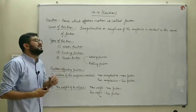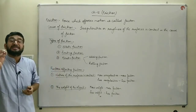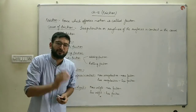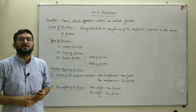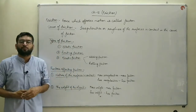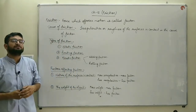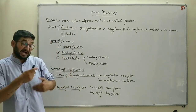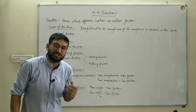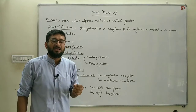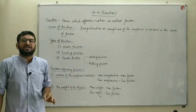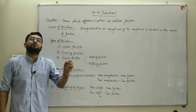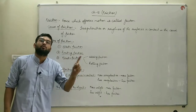The second type is limiting friction. It is the maximum amount of static friction which acts between two objects in direct contact with each other, and one object is just on the verge of motion over the other.